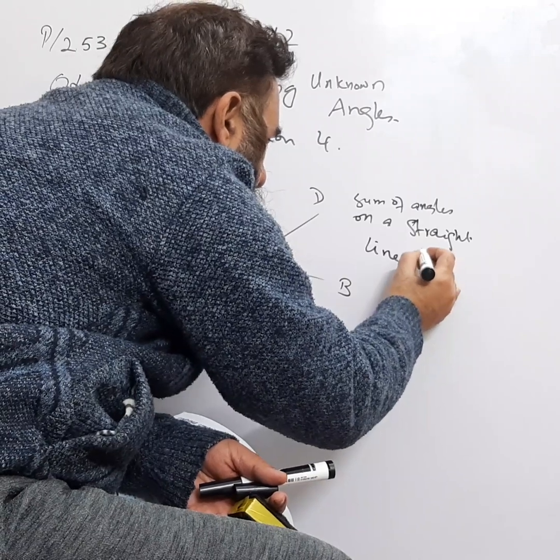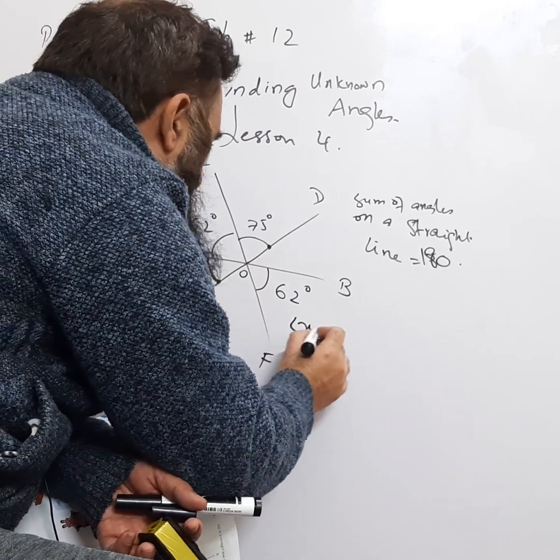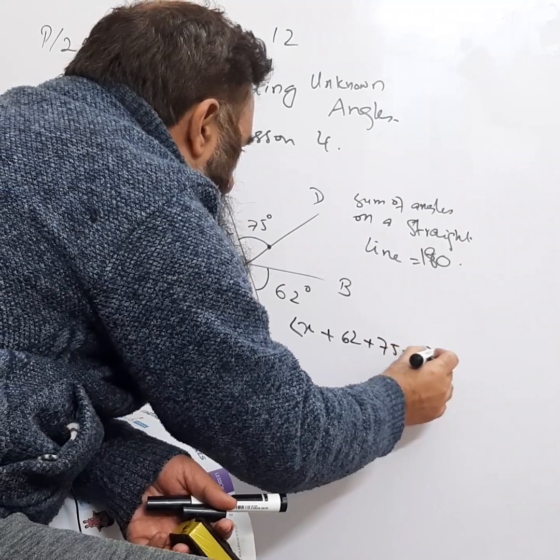So we can say angle x plus 62 plus 75 is equal to 180, because these are the angles on a straight line.